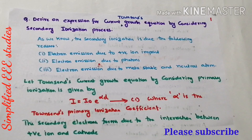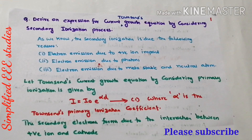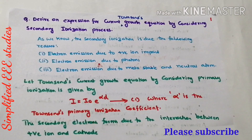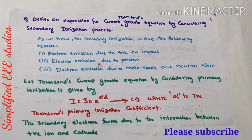Before that, you need to go through what is meant by the secondary ionization process. Kindly watch my previous video — it is already available in the playlist. I have explained what is meant by primary ionization and how the secondary ionization will take place. All the concepts are explained clearly. Once you have completed that particular theory, let us come back to the derivation for Townsend's current growth equation by considering the secondary ionization process.